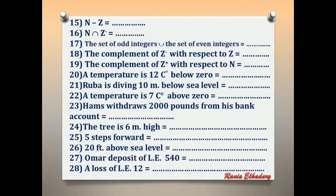Number 15: natural difference Z. If we subtract the set of integers from the natural numbers, what is the remainder? I don't have any remainder. So the answer is phi.